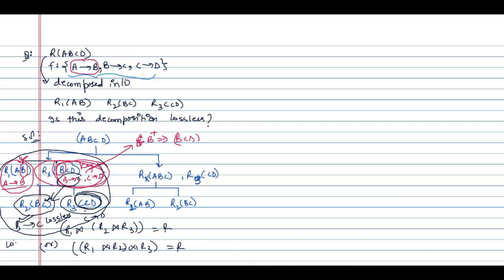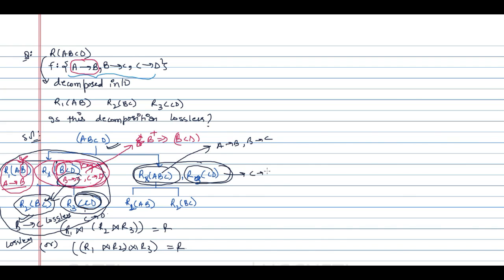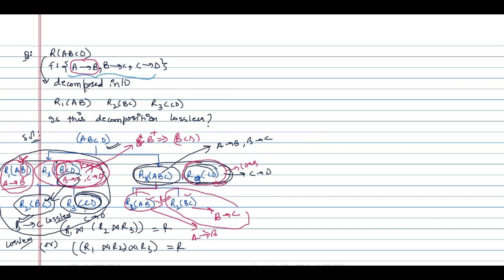If we decompose the table this way we get a lossless decomposition. For the second decomposition path: the functional dependencies valid for R1(A, B, C) are A determines B and B determines C, and for Rx(C, D) it is C determines D. The common attribute is C, and C is a key attribute in that table, so this decomposition is lossless. Further, for R1(A, B) and R2(B, C), B is a key attribute in at least one table, so this decomposition is also lossless.